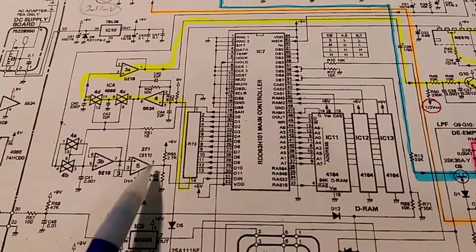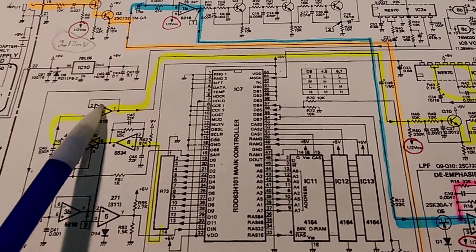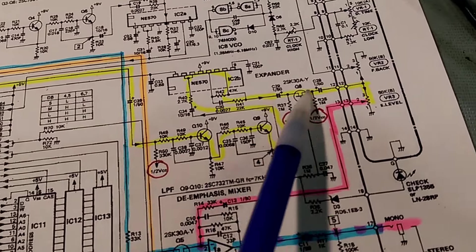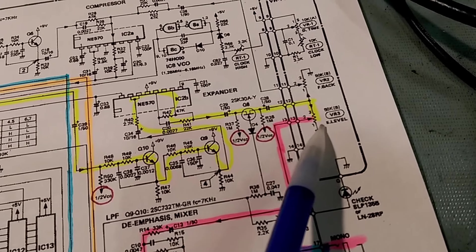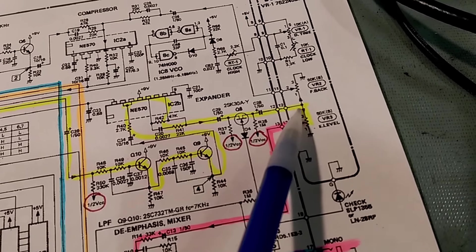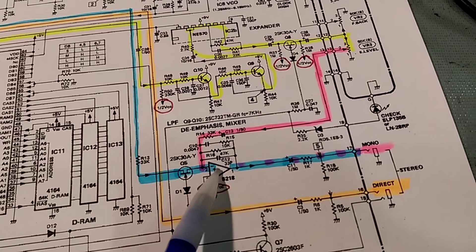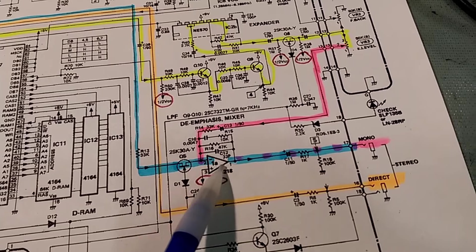This yellow path is the affected signal. The delay itself goes to the effect level control. So when that's all the way up here, it'd be the most effects, and then that feeds into this final output amplifier.